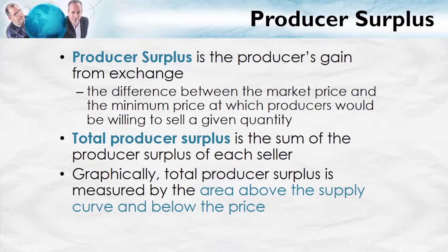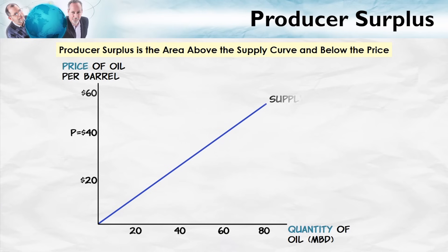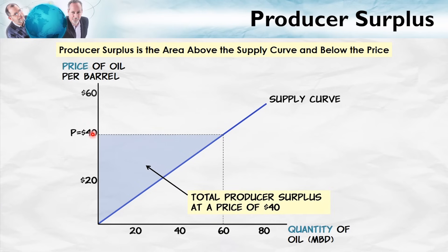Producer surplus is the area above the supply curve and below the price. Here's our supply curve. Suppose the price is $40 — then the producer surplus at that price is this blue area right here. We can think about this as the producer surplus of the lowest cost suppliers, plus the second lowest, the third lowest, the fourth lowest, and so forth, until we get to the marginal supplier. The supplier on the margin earns no producer surplus at all — their costs are just basically equal to the price. As with consumer surplus, we can calculate these areas using our formula for the area of a triangle.